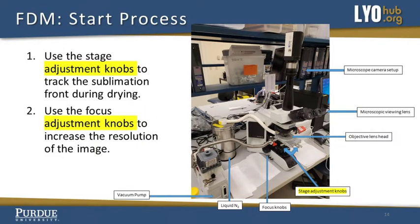Use the stage adjustment knobs to track the sublimation front during drying. Use the focus adjustment knobs to increase the resolution of the image.